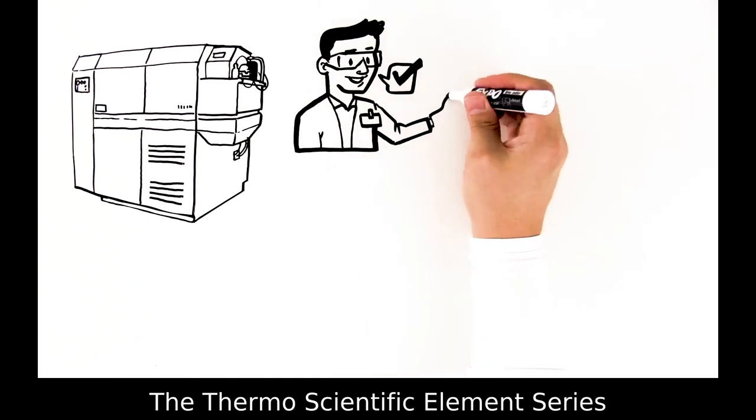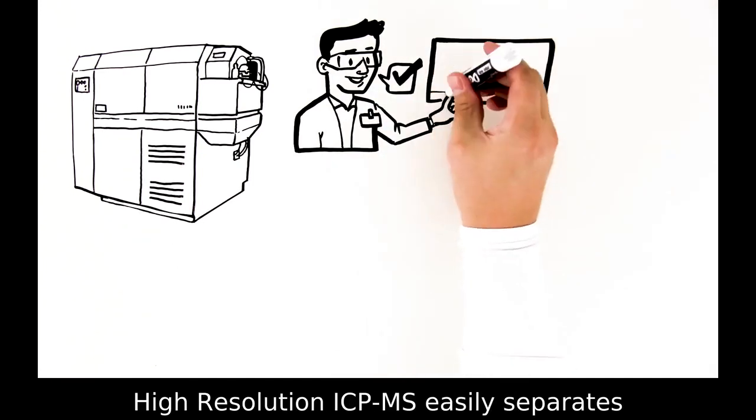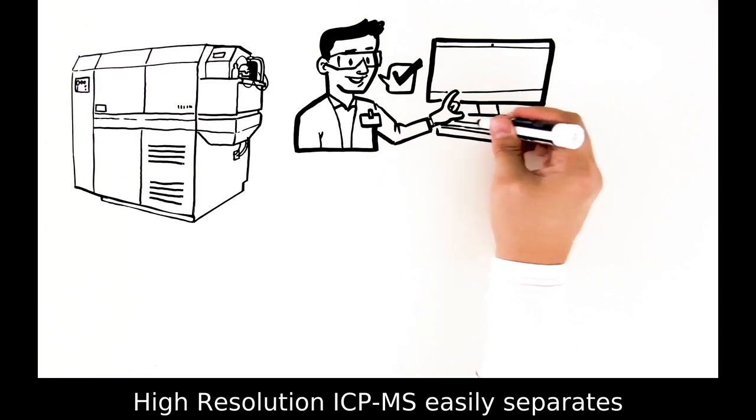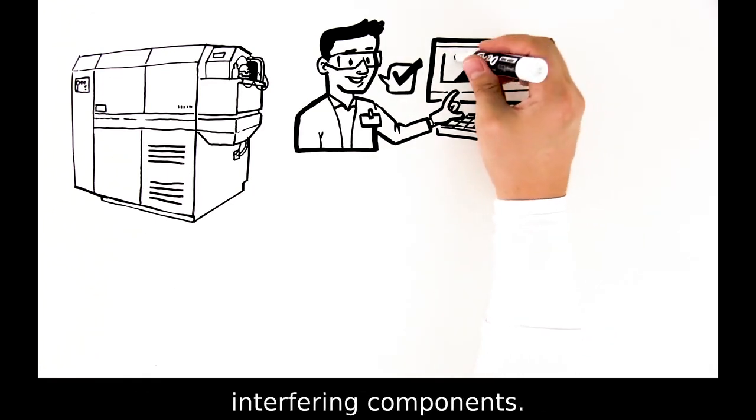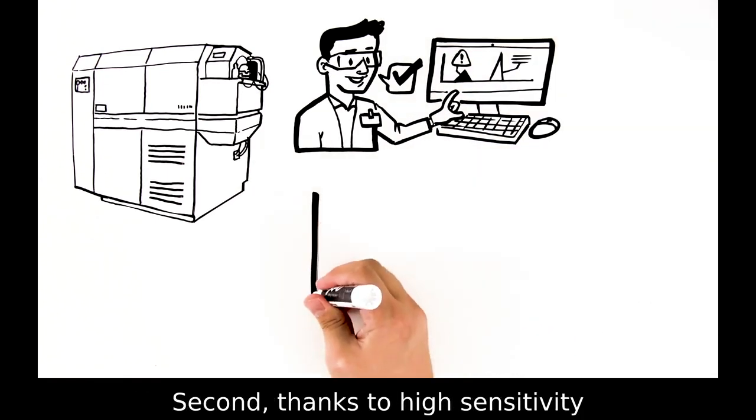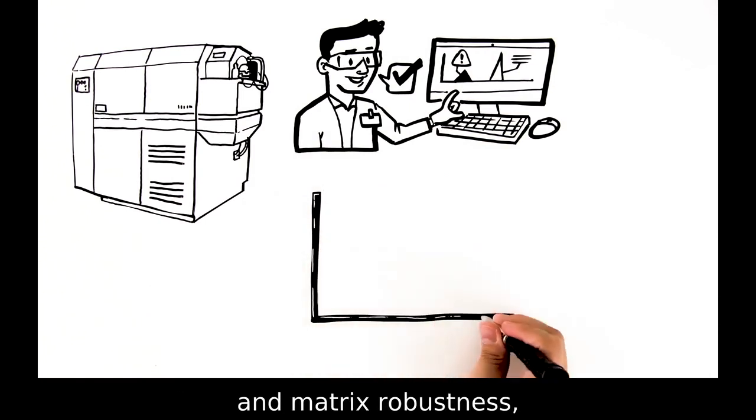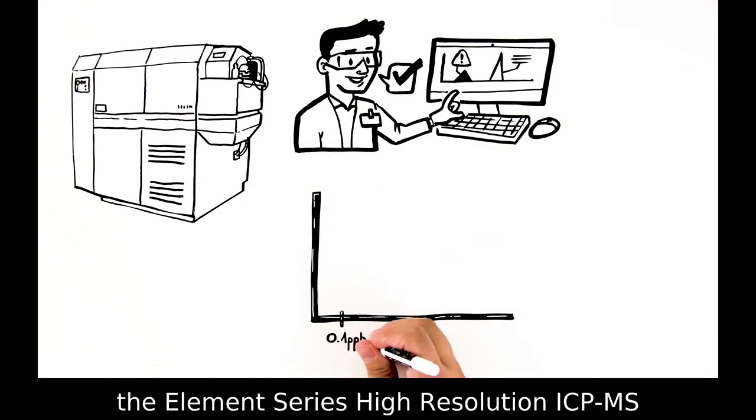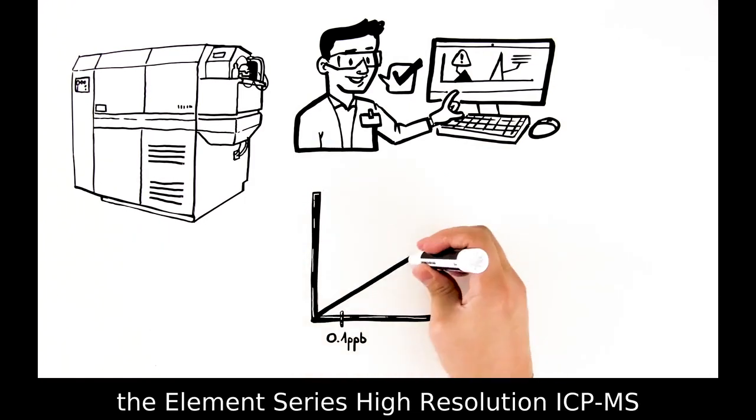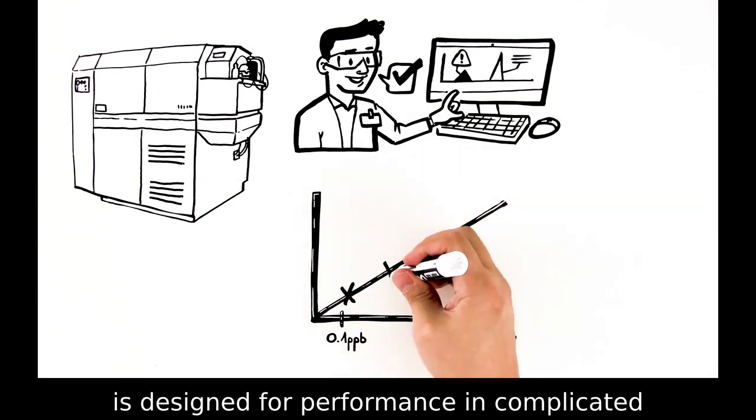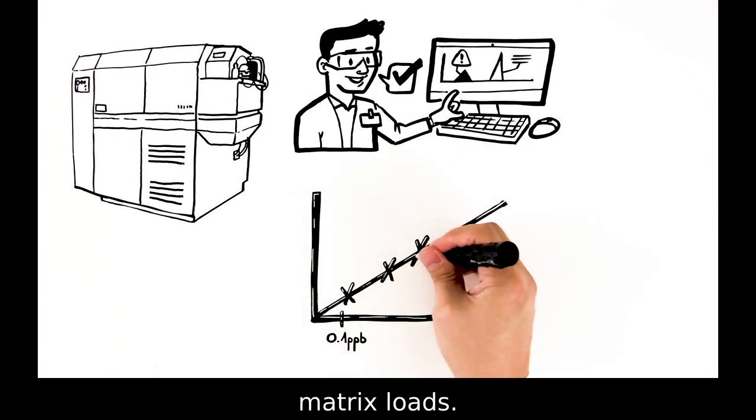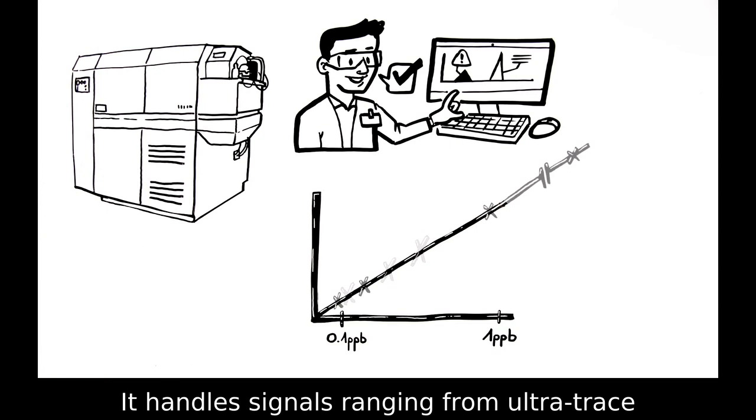Second, thanks to high sensitivity and matrix robustness, the Element Series High-Resolution ICP-MS is designed for performance in complicated matrix loads. It handles signals ranging from ultra-trace to 100% of the sample matrices, and can assess any matrix.